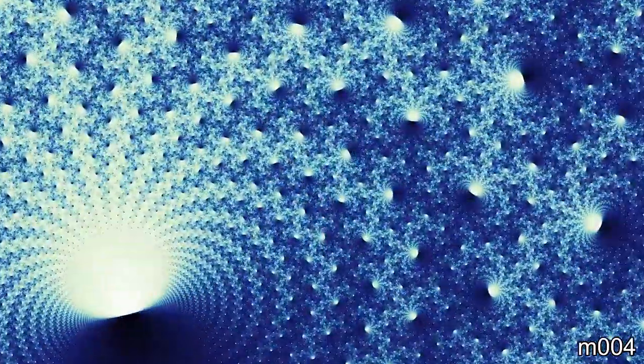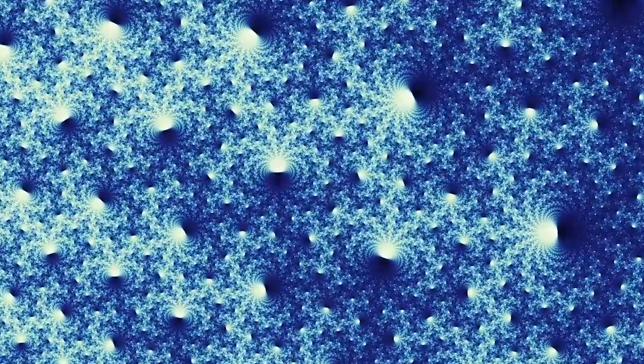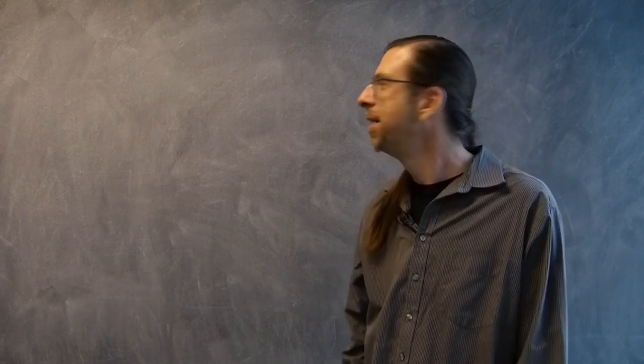But we're getting ahead of ourselves. Let's try to explain what these images are showing and what cohomology has to do with them. Let's start with a simple example and work our way up to what's going on in the app.